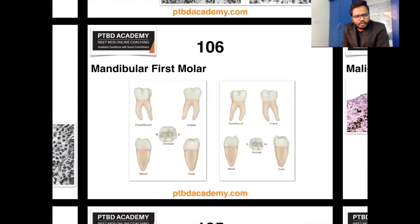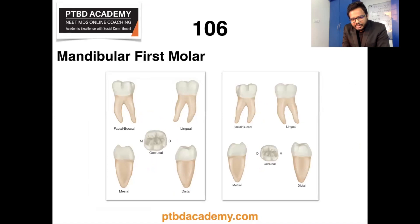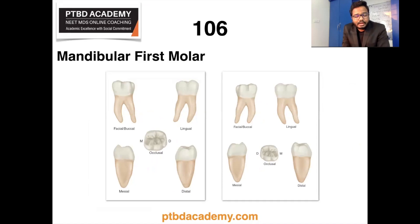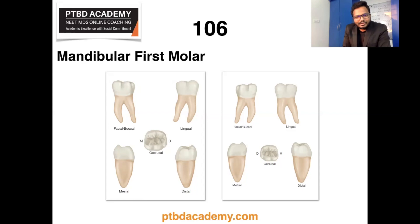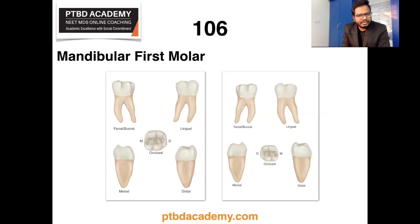Moving on — mandibular first molar, another image-based question. You identify and tell me which is left and which is right. The one on the left side of the screen is the left mandibular first molar, and on the right side it is the right mandibular first molar. Try to orient the occlusal surface within the oral cavity of the patient for more clarity. On the occlusal aspect, always remember the buccal side has three cusps and the smallest cusp is the distal cusp — these are the clues to identify left from right.